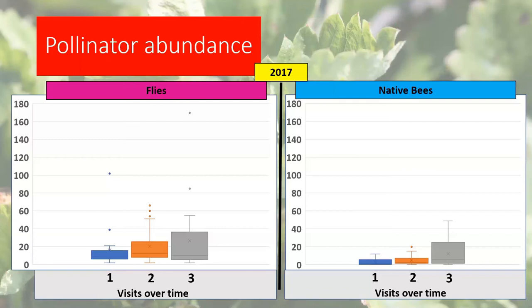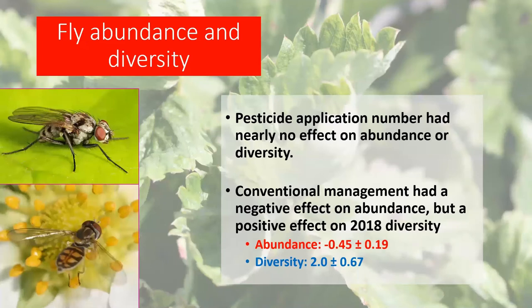Looking at pollinator abundance over visits throughout the season, the first visit shows little variability, but there's a general increase in flies over time. Native bees showed the same trend but took longer to get going — not really increasing until the second or third visit near the end of the season, by which point flowers are largely gone. In 2018, there were a ton of flies early that fizzled out, but native bees showed a more drastic increase later. Inter-year variability is driven by differences in weather and soil temperature timing for native bee emergence. Flies tend to be non-central foragers just moving through fields, but in such high numbers they still provide pollination services when honeybees and native bees aren't active.